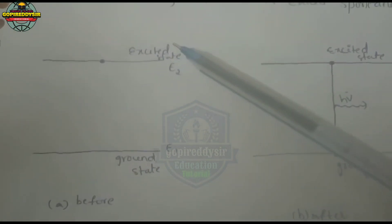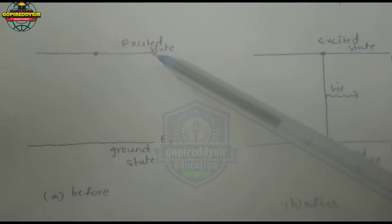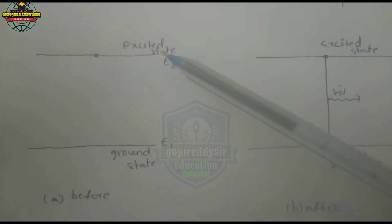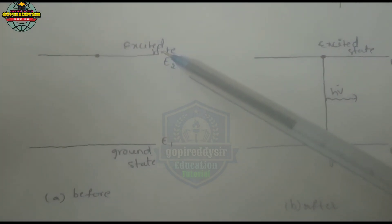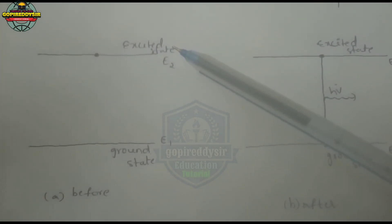The atom has a lifetime in the excited state. When that lifetime expires, the atom transitions spontaneously to the ground state.